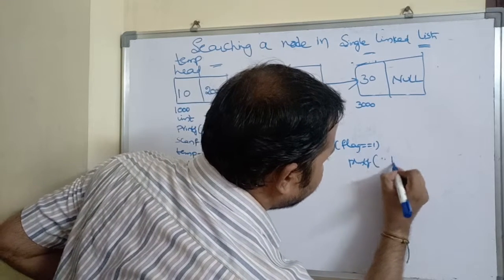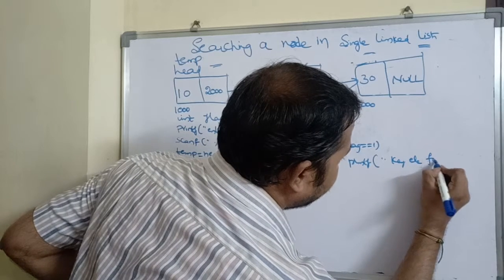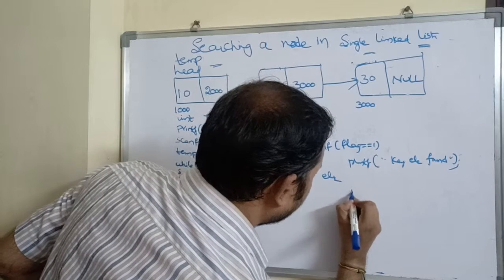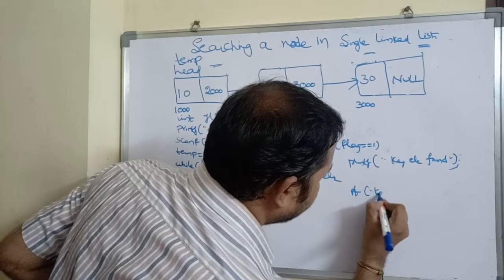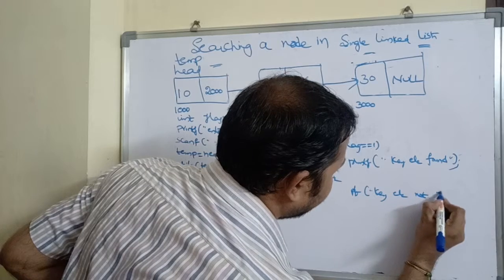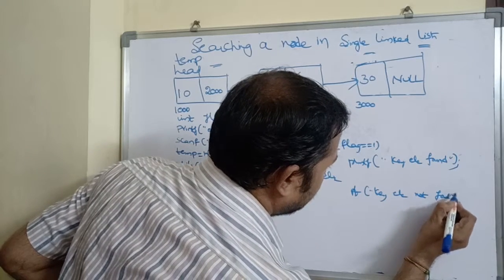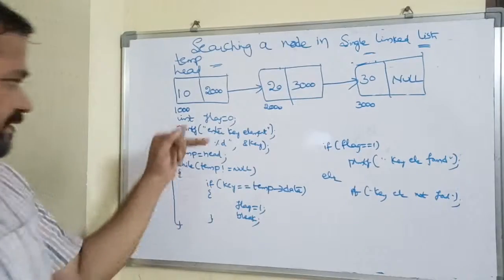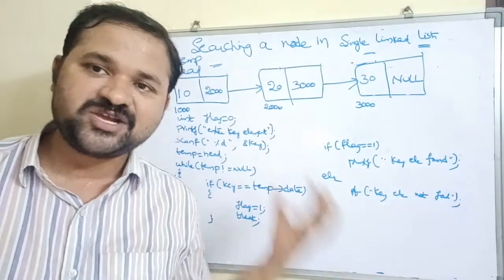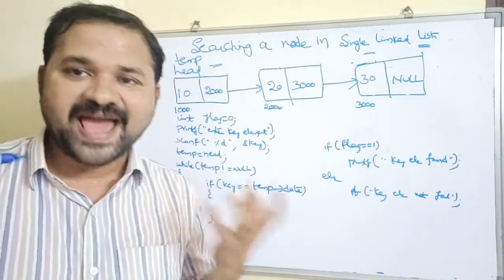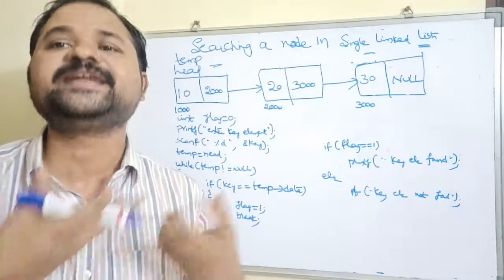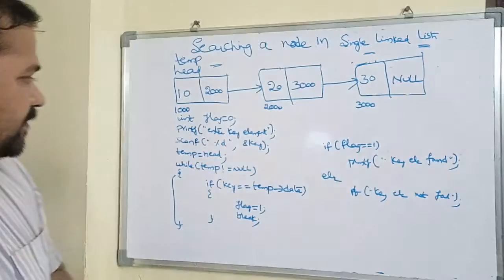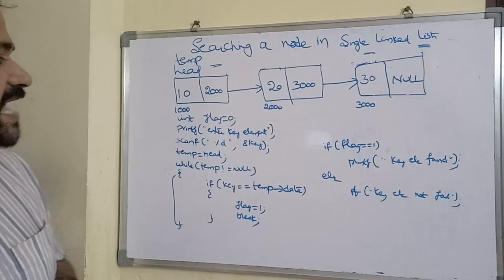If flag == 1, we print 'key element found.' Otherwise, we print 'key element not found.' The initial value of flag is zero, so if flag remains zero the key element was not found, whereas if flag becomes one the key element was found.